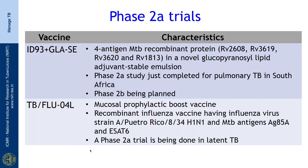The ID93/GLA-SE is a 4-antigen MTB recombinant protein containing Rv2608, Rv3619, Rv3620, and Rv1813 in a novel glucopyranosyl lipid adjuvant stable emulsion; a Phase 2a study has just completed for pulmonary TB in South Africa and a Phase 2b study is being planned. The TB-Flu-04L is a mucosal prophylactic booster vaccine that can be given by inhalation — a recombinant influenza vaccine carrying influenza virus strains H1N1 and MTB antigens 85A and ESAT-6; a Phase 2a trial is being done in latent TB.